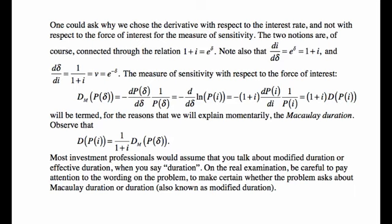There is a measure of sensitivity with respect to the force of interest called Macaulay duration, defined as minus the derivative of the price with respect to delta times 1 over the price. It must equal (1 + i) times regular duration, or regular duration equals 1/(1 + i) times the Macaulay duration. Investment people call the regular duration modified duration.